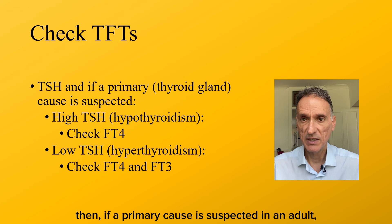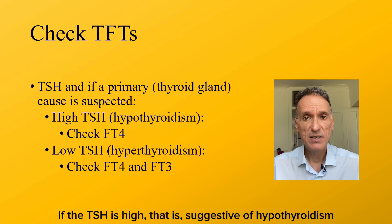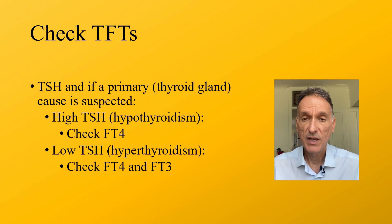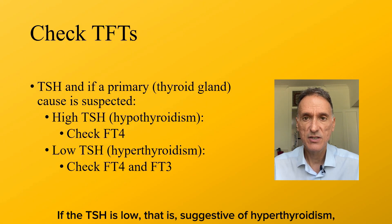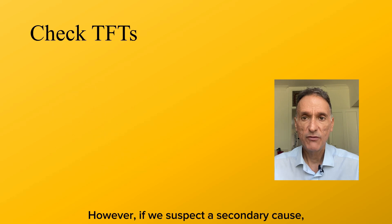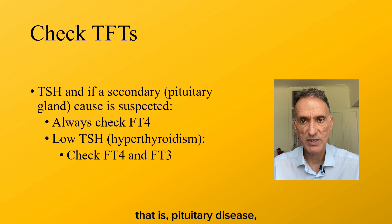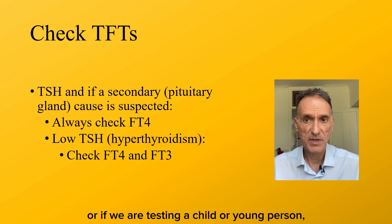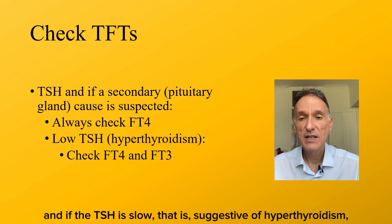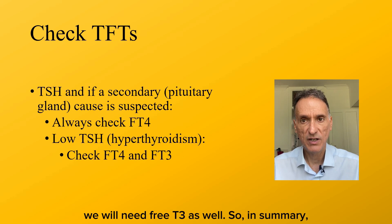If a primary cause is suspected in an adult: if the TSH is high, suggestive of hypothyroidism, we will need the free T4; if the TSH is low, suggestive of hyperthyroidism, we will need free T4 and free T3. However, if we suspect a secondary cause — that is, pituitary disease — or if we are testing a child or young person, we will need results for both TSH and free T4, and if the TSH is low we will need free T3 as well.